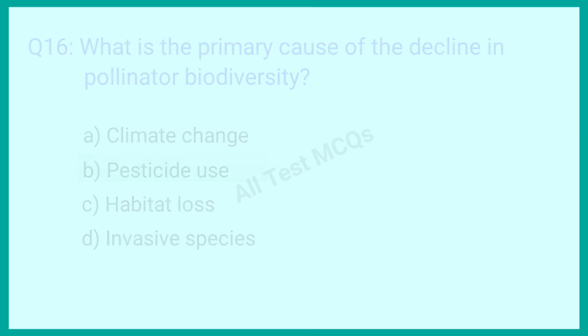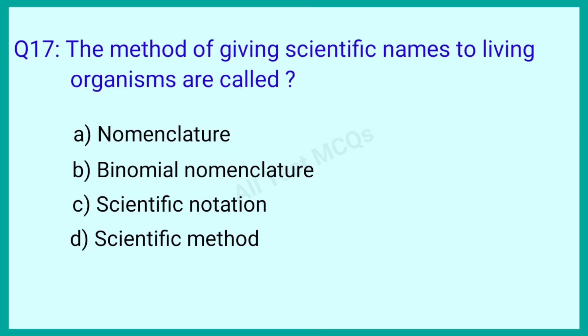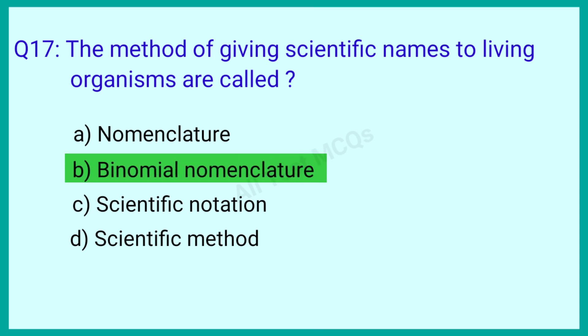Question number 17: The method of giving scientific names to living organisms is called? The correct answer is option B: Binomial nomenclature.